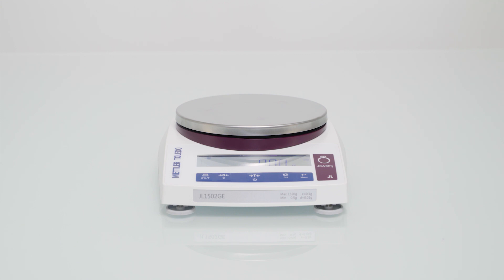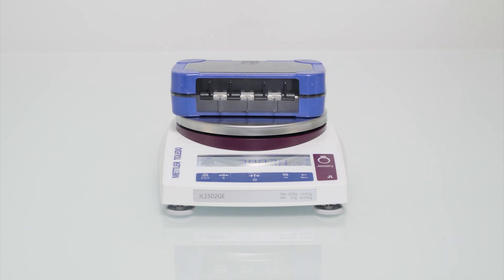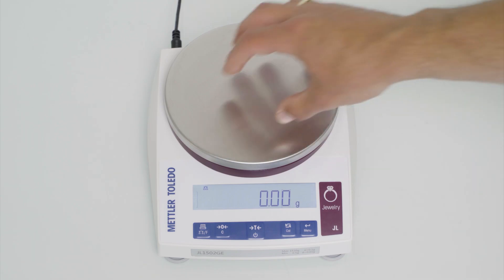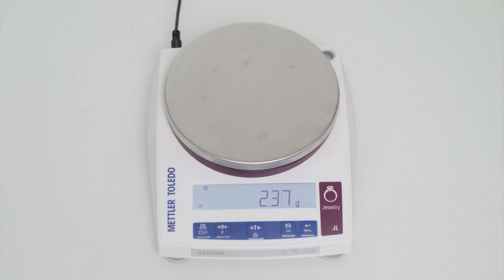The JL offers a large weighing pan made from stainless steel which makes weighing of larger objects convenient. It also has an overload protection to help ensure a long balanced life even under sub-optimal conditions.